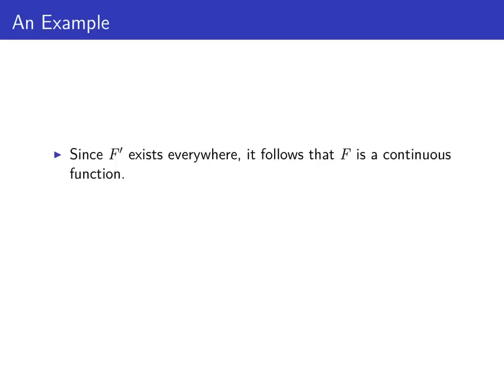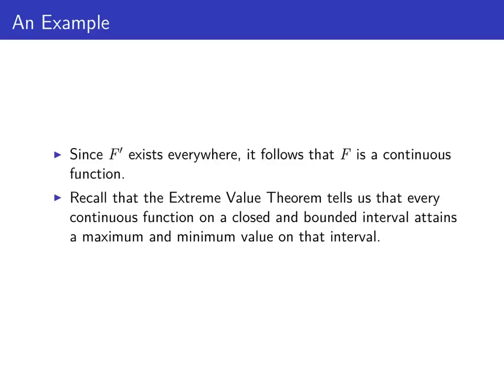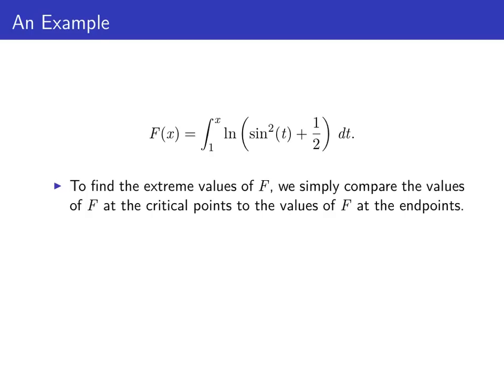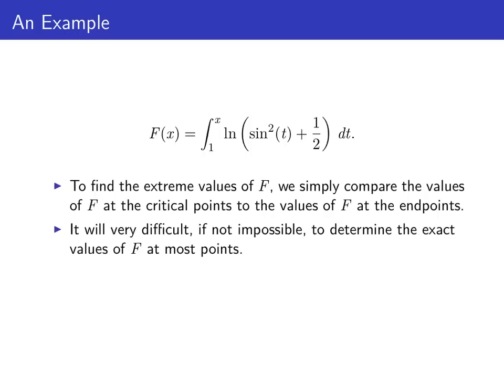The fact that F' exists everywhere means F is a continuous function. The extreme value theorem tells us that every continuous function on a closed and bounded interval achieves its maximum and minimum value on that interval. To find these values, we test F at the critical points and compare to the values at the endpoints. Given how F is defined, we can't find exact values, but we can approximate them using middle sums.